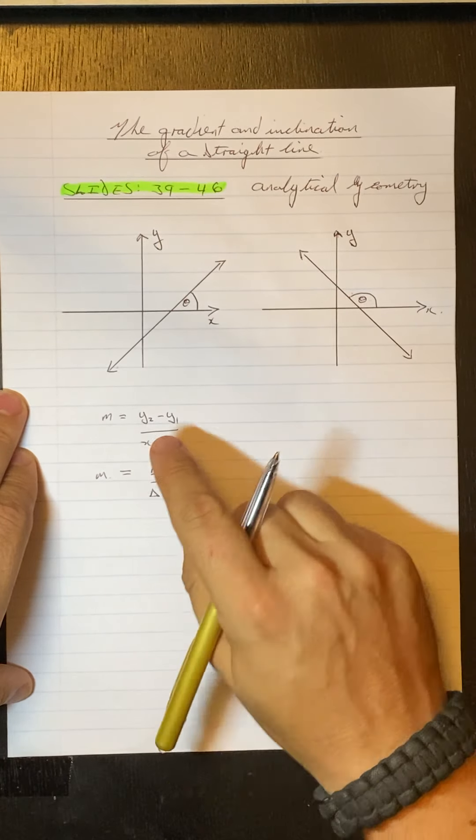All I do, substitute those into this formula. So our y2 value is 0 minus our y1 value is 5. All over, our x2 value is 2 minus our x1 value is minus 3. So if we work that out, we get 0 minus 5 is minus 5. Over 2 minus minus 3 becomes 2 plus 3, which gives us 5.